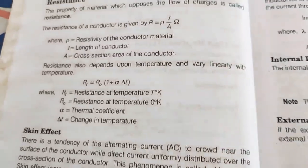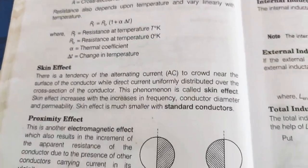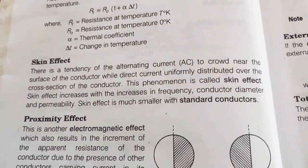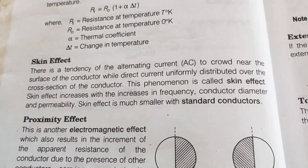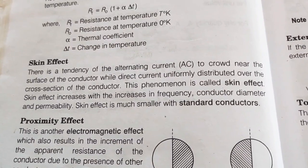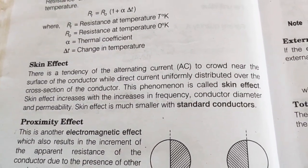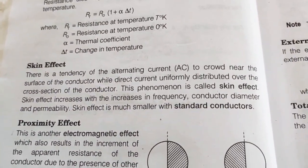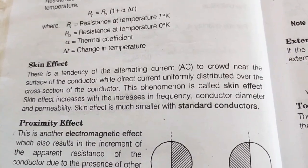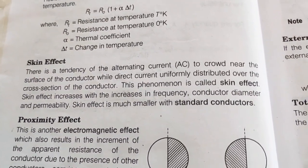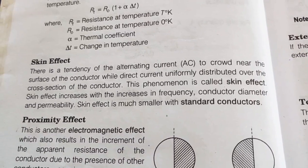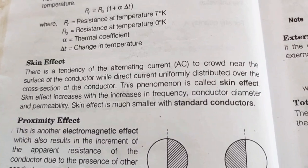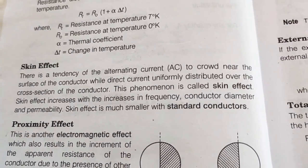An important factor is the skin effect. Skin effect is the tendency of alternating current to crowd near the surface of the conductor, while direct current is uniformly distributed over the cross-section. This phenomenon is called skin effect. Skin effect increases with increase in frequency, conductor diameter, and permeability. Skin effect is much smaller with standard conductors.